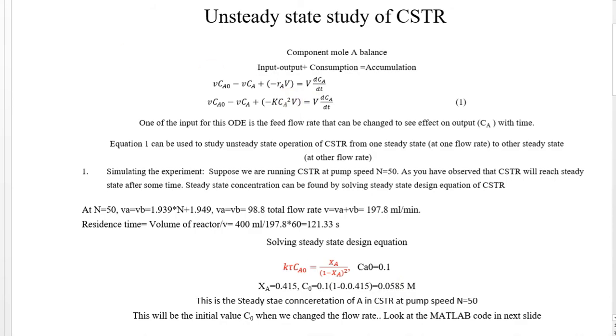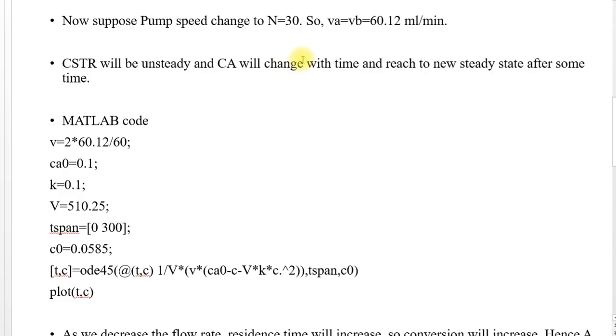Now suppose we change the flow rate from 50 to 30. Your flow rate is decreased now. So new flow rate is this. As you can see, we decrease the flow rate, residence time increases. So reaction will proceed further. You will have more reaction, more conversion.